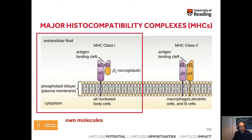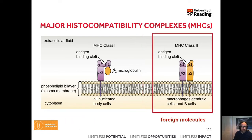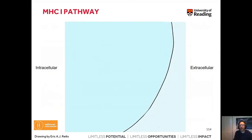MHC class 1 molecules present our own molecules — they are sort of ID cards of each cell within our body. On those MHC class 1 molecules, our cells show the immune system that they are functioning properly and do belong to the body. In contrast, MHC class 2 molecules present foreign molecules. In the case of macrophages, when they ingest and digest microbes, they present parts of those microbes on MHC class 2 molecules, thereby teaching the immune system to react to those specific microorganisms.